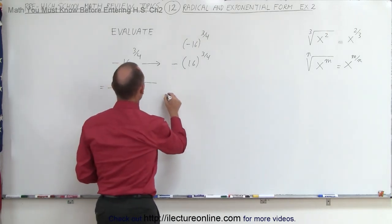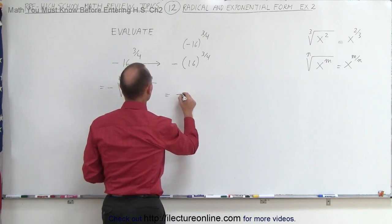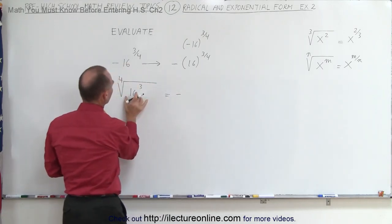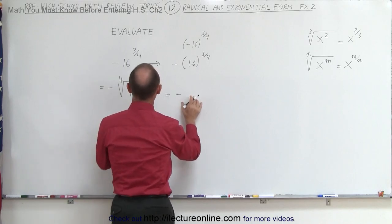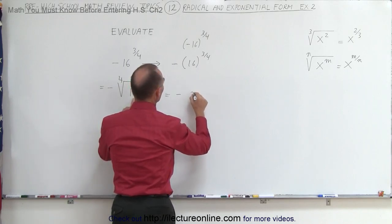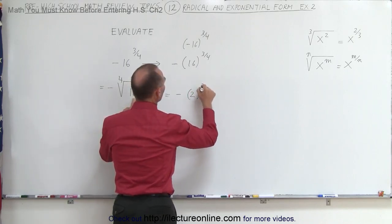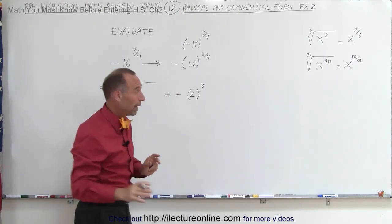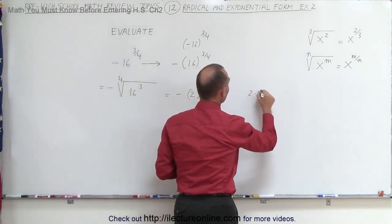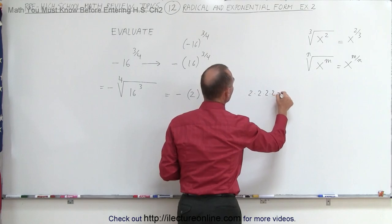So in other words, this is equal to negative. And what we can do is we can take the fourth root of this number. So this is going to be the fourth root of 16 is 2 raised to the third power. The reason why I know that is because 2 times 2 times 2 times 2 equals 16.